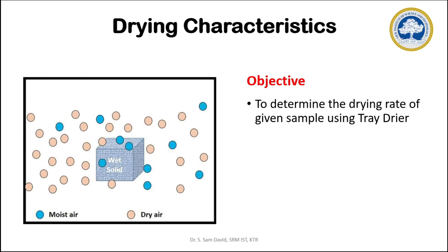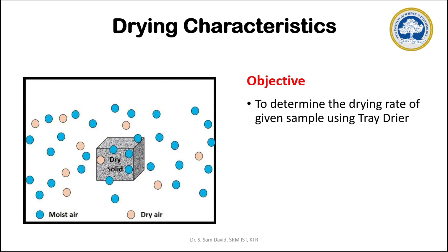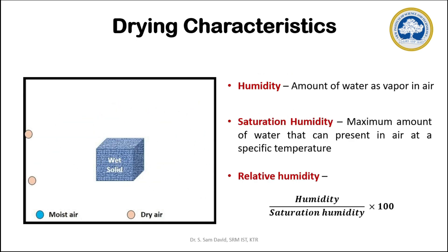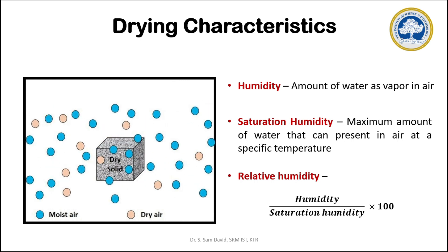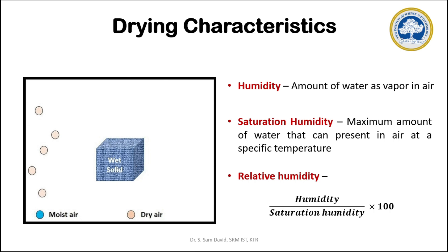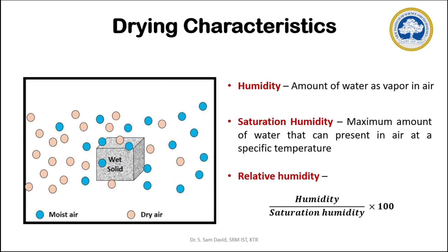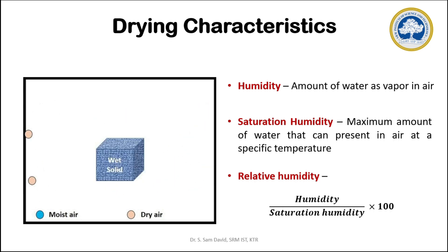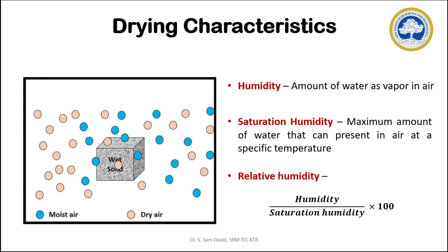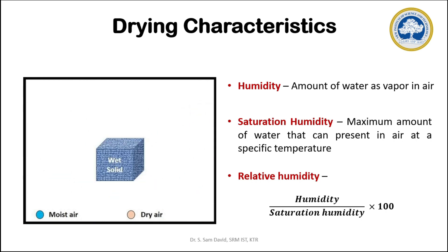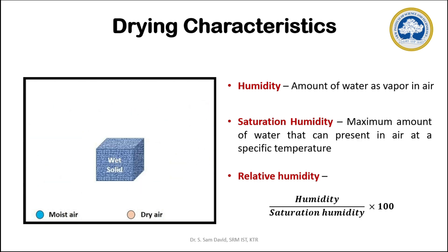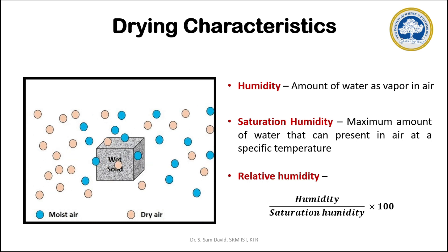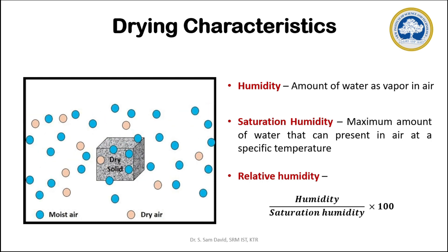To start this experiment, we need to know some basic definitions involved in drying. The first terminology is humidity — it is the amount of water present in the air as vapor. The next term is saturation humidity, which is the maximum possible amount of water that can be present in the air at a specific temperature. The relation between humidity and saturation humidity is termed relative humidity. The air cannot take all the water from the wet material.